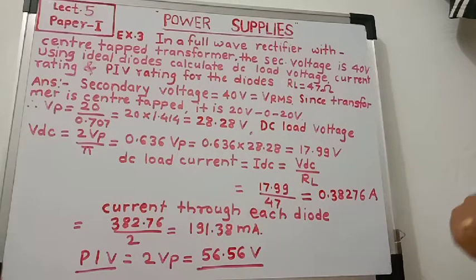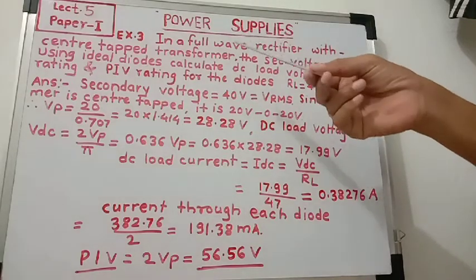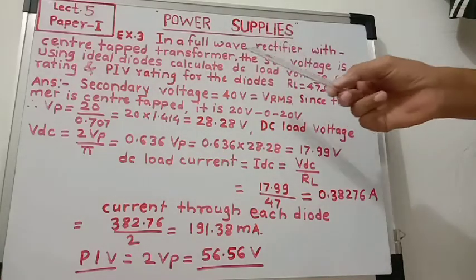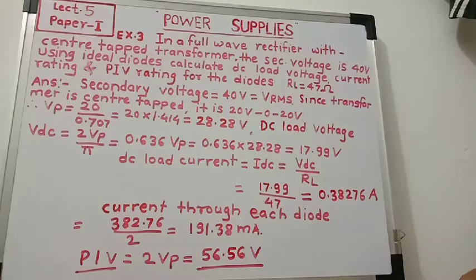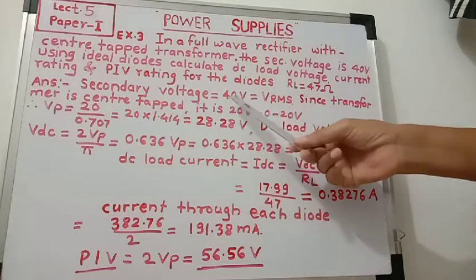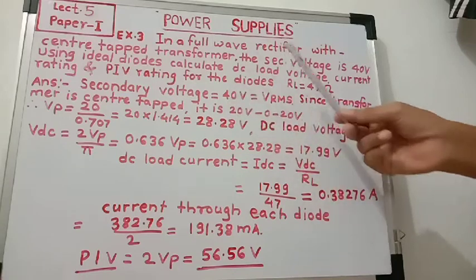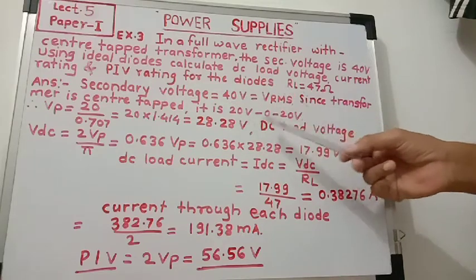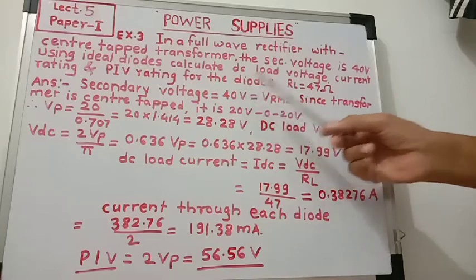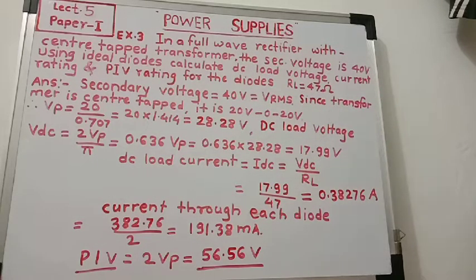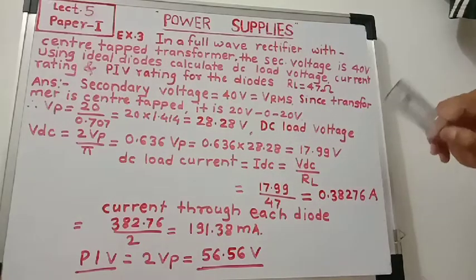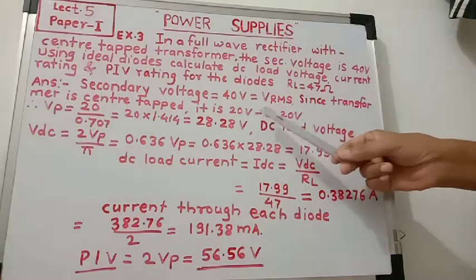Here, a center tap full wave rectifier circuit is shown. In a center tap full wave rectifier circuit, a center tap transformer is used. The secondary voltage is 40 volts, which is an RMS voltage. Since a center tap transformer is used, the total voltage is 40 volts, meaning the transformer is actually 20 volts, 0, 20 volts — that is, 20 plus 20 equals 40.